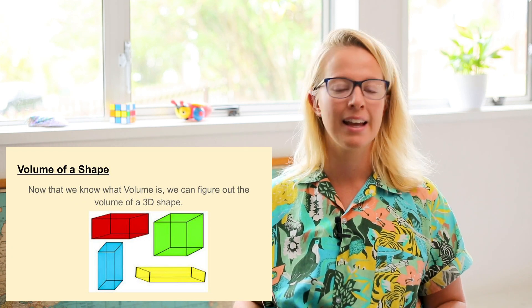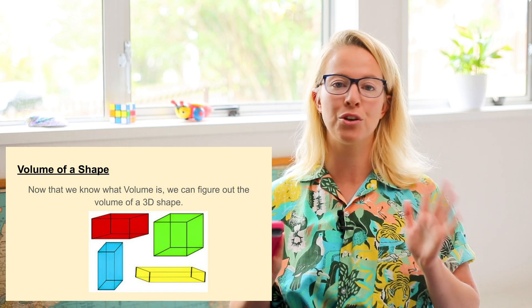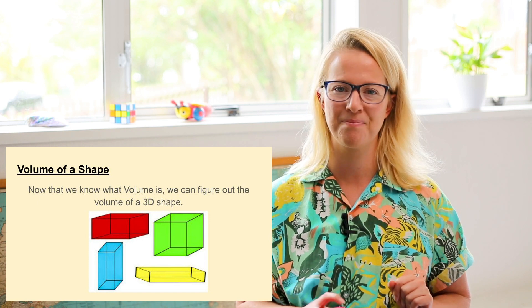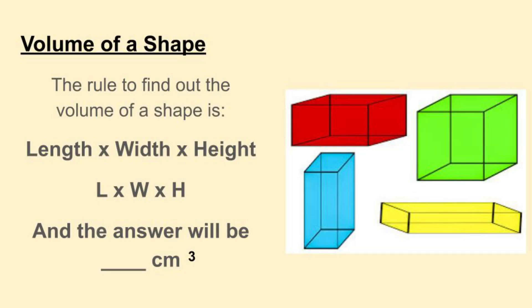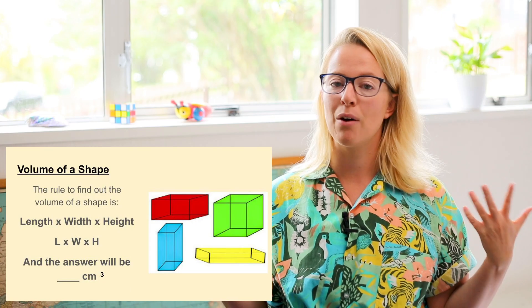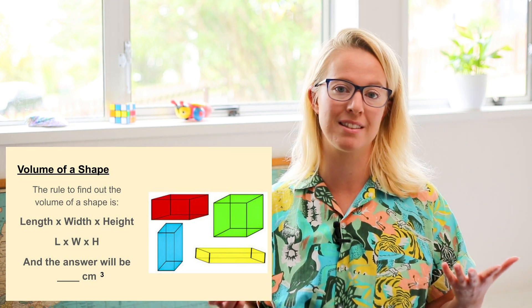Now that we know a little bit more about volume, we can start looking at the volume of 3D shapes, and there are some specific rules we need to use. We're going to start with cuboids because they might be the easiest ones to solve. The rule is: length times width times height, sometimes written as L × W × H. The answer will always be in centimeters cubed — that little 3 means cubed. It might not always be centimeters; it could be meters, kilometers, or millimeters depending on the size of the shape.